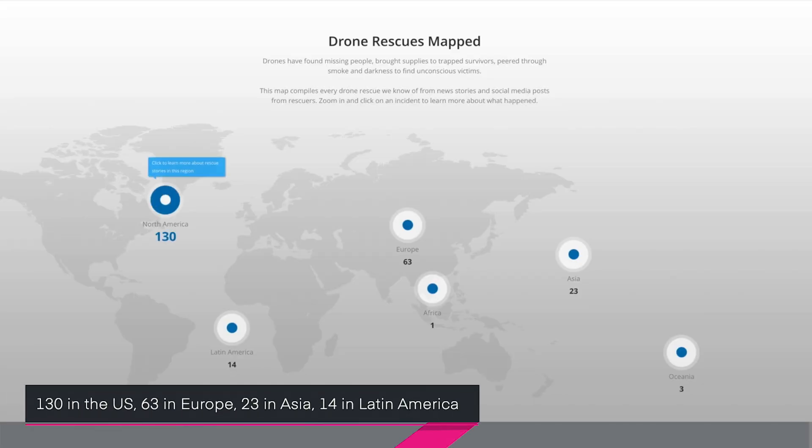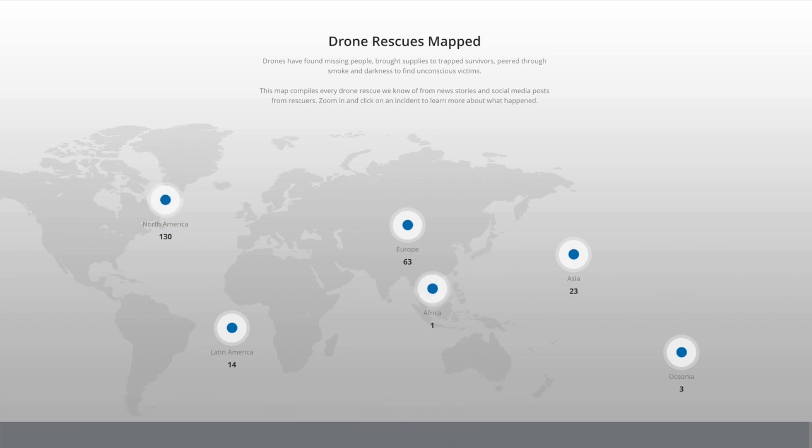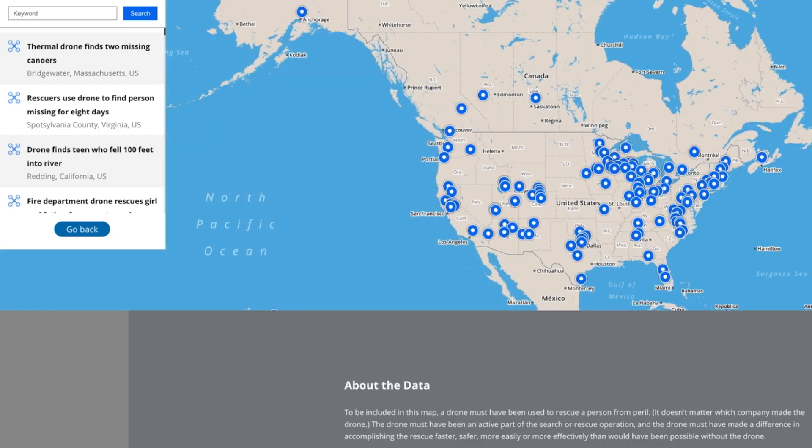So in the US there was 130 rescues, in Europe it was 63, in Asia it was 23, and then a bunch in Latin America, Africa, and then Oceania right there. You can click on each of them and then you can see, click on even more detail to find actually exactly what happened.